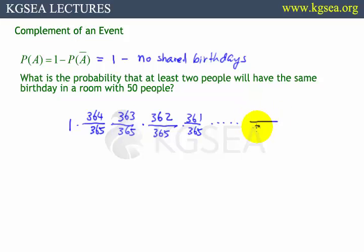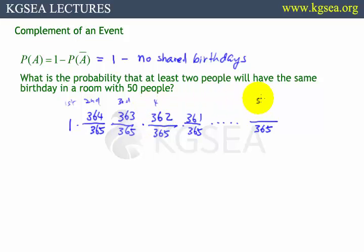What would be the fiftieth person's story? He will have to pick a day out of 365 days — we're ignoring leap years. The first person has 365 out of 365, the second has 364 out of 365, the third has 363 out of 365, and so on. If I multiply all these fractions, I get the probability that 50 people do not share any birthday. I'm curious what that number would be.